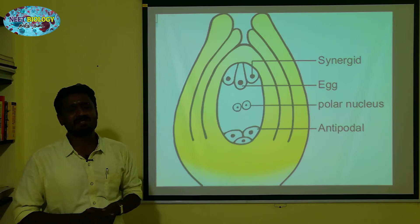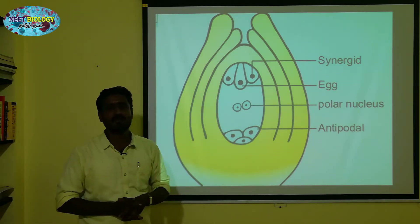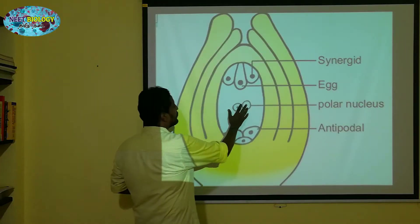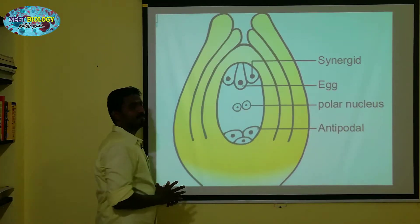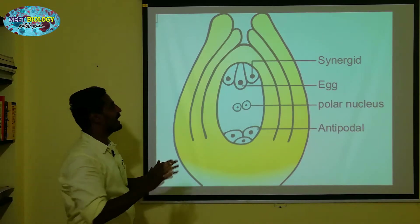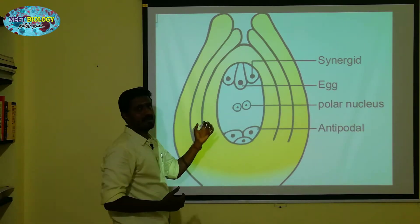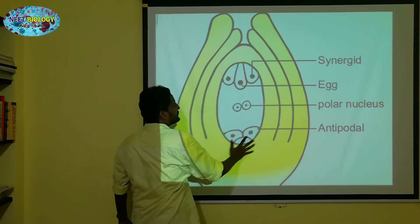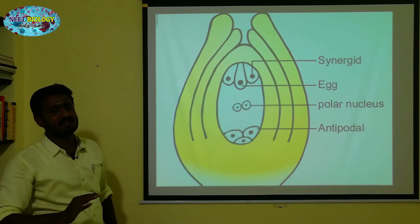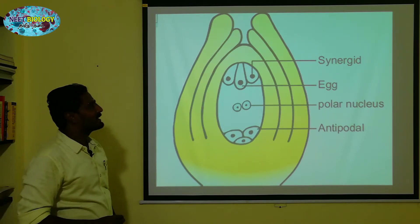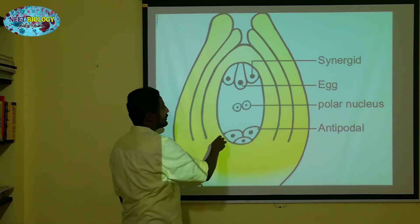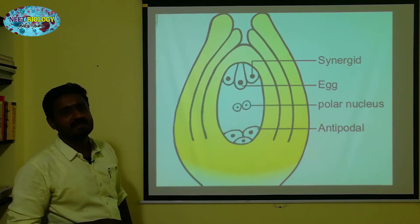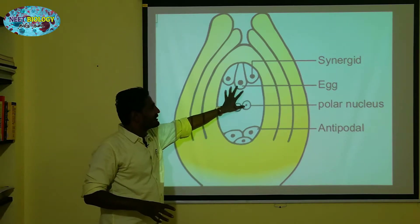So this is double fertilization. In the center, there is a triple fusion movement. We will talk about the endosperm. The endosperm will be able to occupy the embryo sac fully. That's why we develop the embryo and endosperm together. This is the normal logic — what is the plan for the embryo and endosperm.